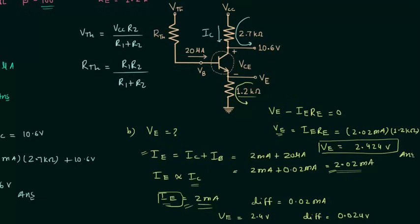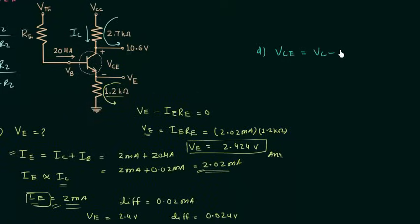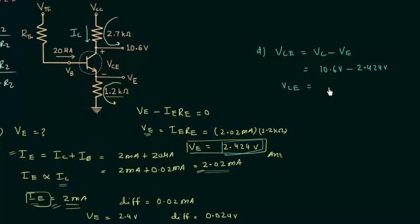Now we will solve Part D to calculate the output voltage VCE. VCE equals VC minus VE. VC is 10.6 volts and VE is 2.424 volts, so VCE is equal to 8.176 volts.